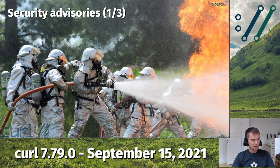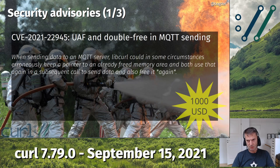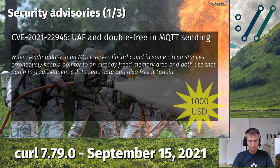We have three security advisories this time. The first one was reported many weeks ago. We call it CVE-2021-22945: use-after-free and double-free in MQTT sending. If you're using MQTT with curl - and yes, curl does MQTT and libcurl too - this is a bug where if curl tries to send MQTT and can't send the entire thing, it keeps the remainder and tries again later. In that handling, it could end up freeing that memory twice. It's a pretty bad bug because it can be exploited.